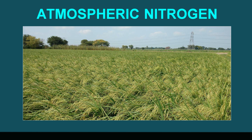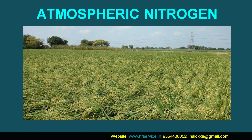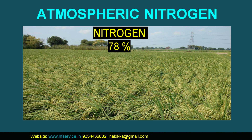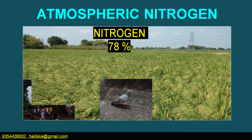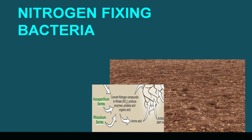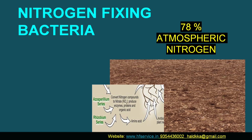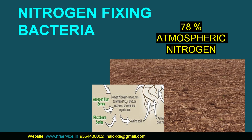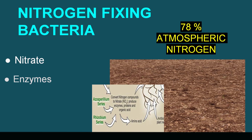Let us try to understand this process. We know the atmosphere has 78 percent nitrogen, which is very important and crucial to sustain life on this earth. Certain soil bacteria like Azospirillum, Azotobacter, Acetobacter, and Rhizobium assimilate or synthesize this 78 percent atmospheric nitrogen and, in the presence of water, convert them into nitrate, enzymes, protein, organic acid, and amino acids.